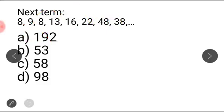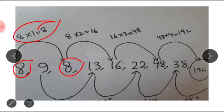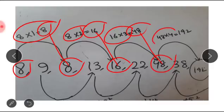For the odd-positioned numbers: the first number is 8. Eight multiplied by 1 is 8, then 8 multiplied by 2 is 16, then 16 multiplied by 3 is 48. So the next odd-position term will be 48 multiplied by 4, which gives 192.